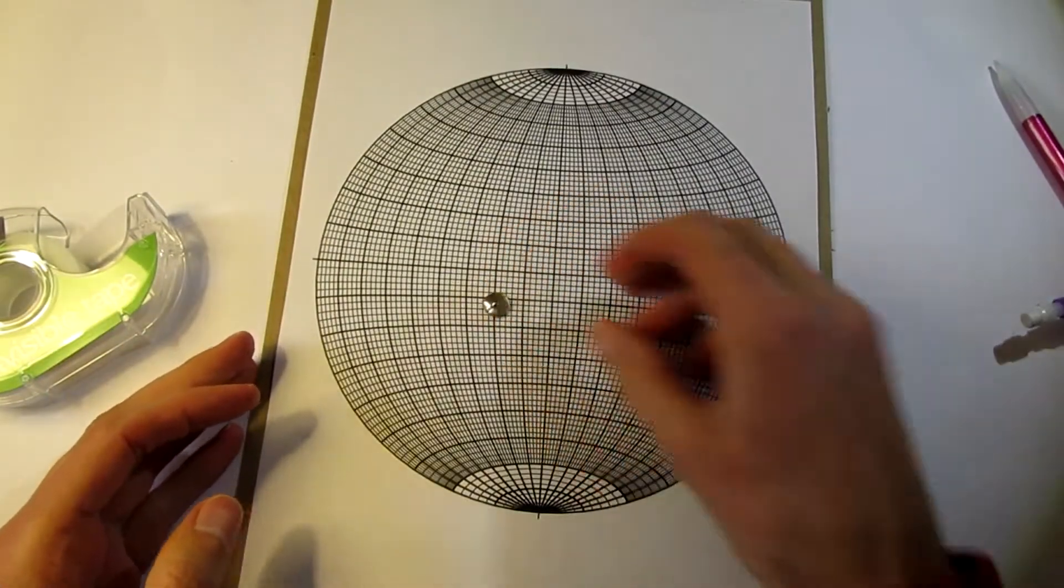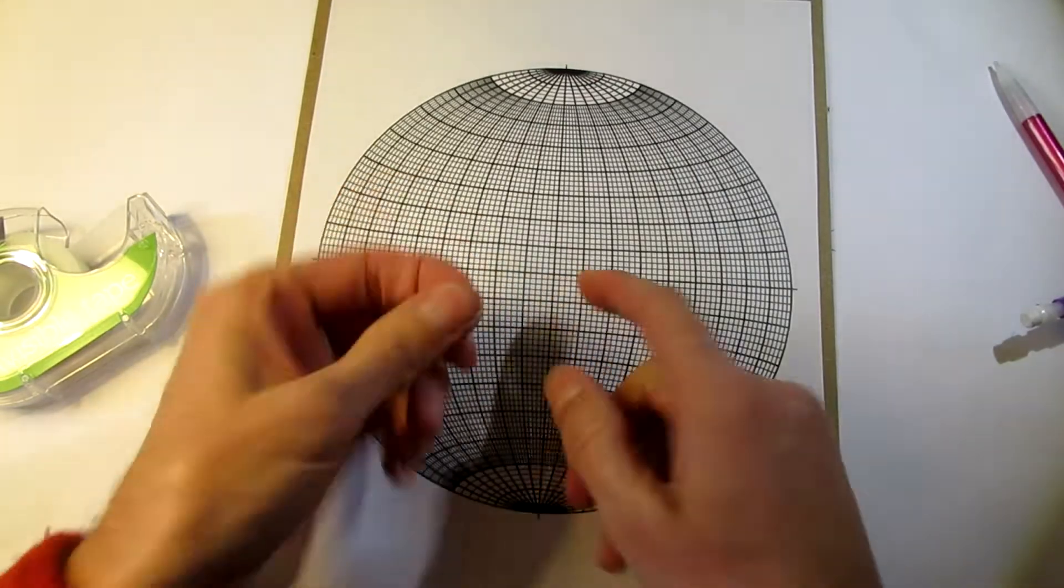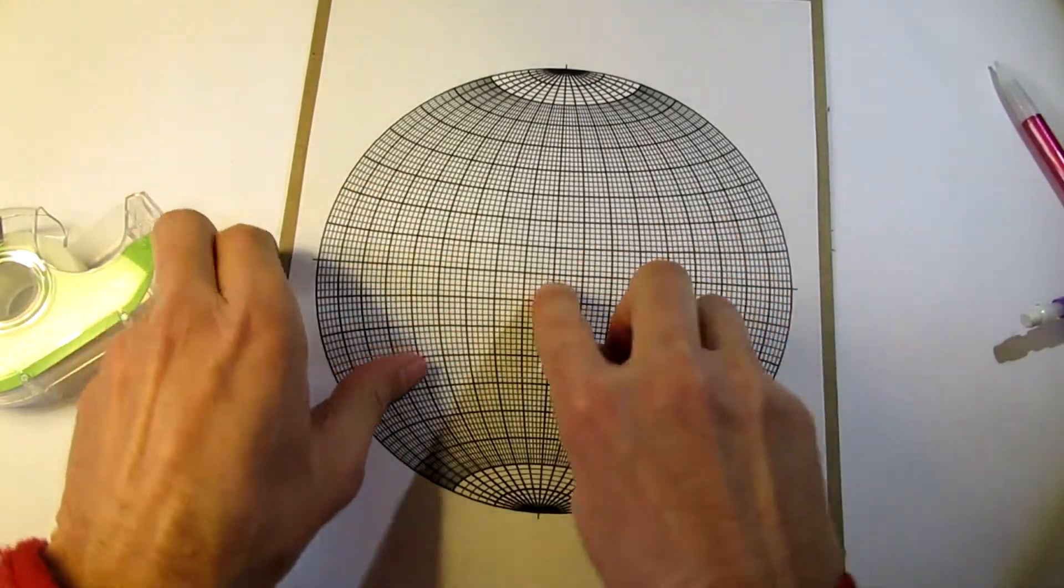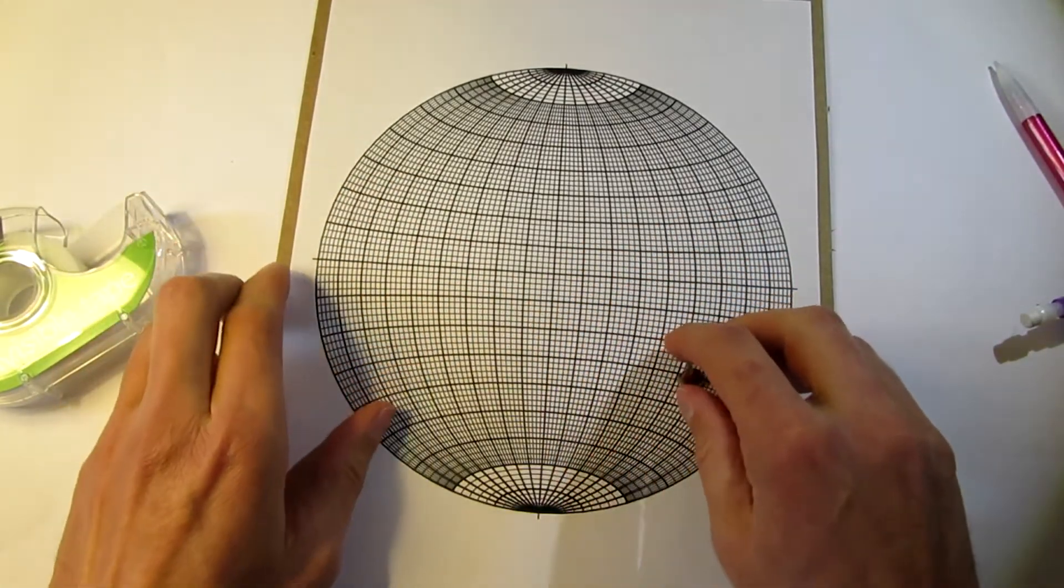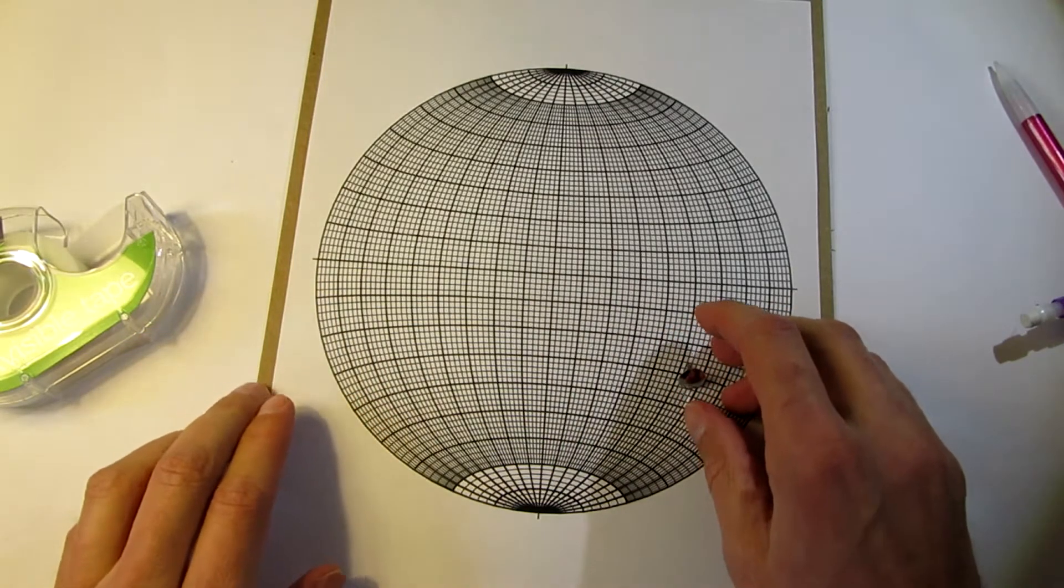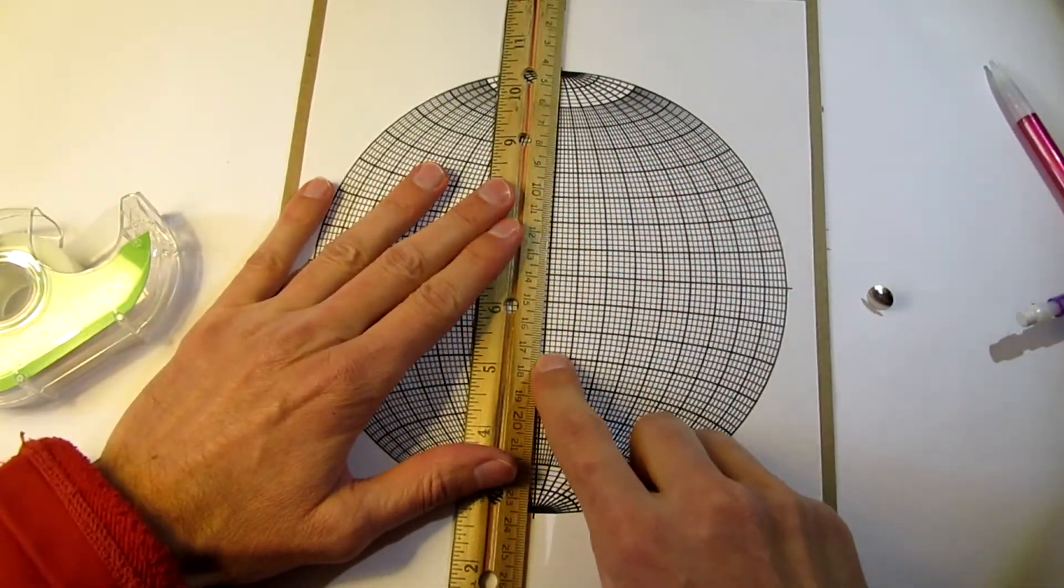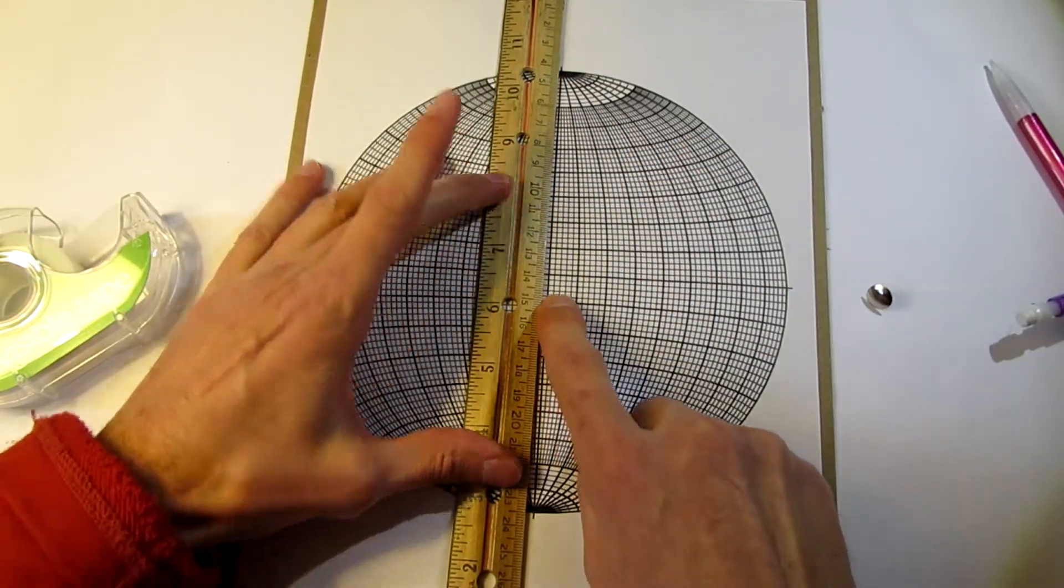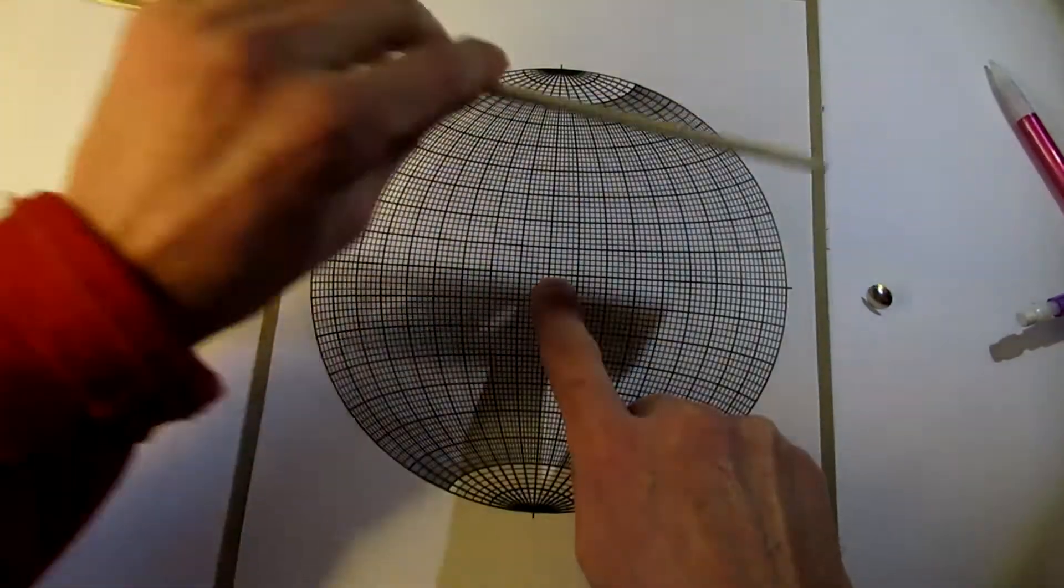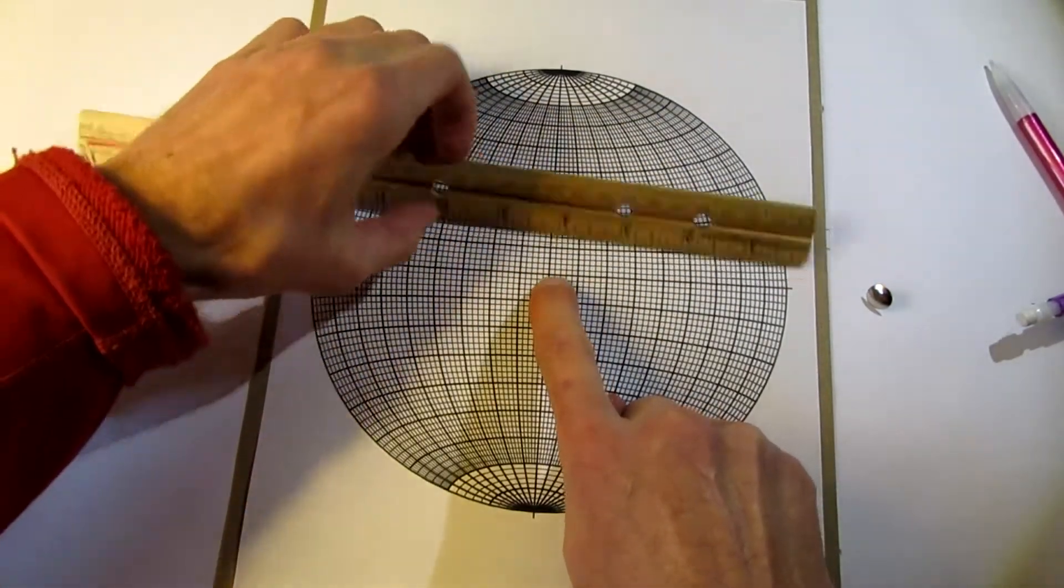Now it's time for the thumbtack. You're going to put the thumbtack face first down through the exact center. And where you can tell the exact center is, look at the north-south line going through here and then east-west right there. That's the center.